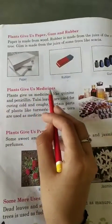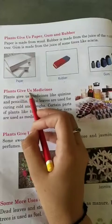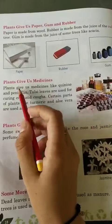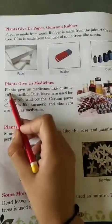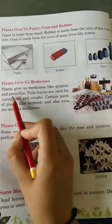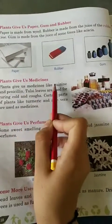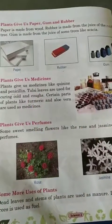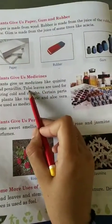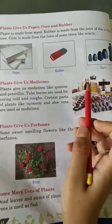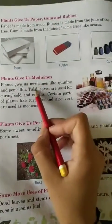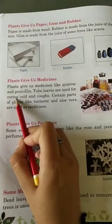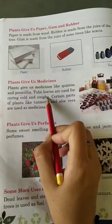Plants give us medicines. Plants give us medicines like quinine and penicillin. These medicines are made from plants. Tulsi leaves are used for curing cold — 'sardi' — and coughs — 'khansi'.